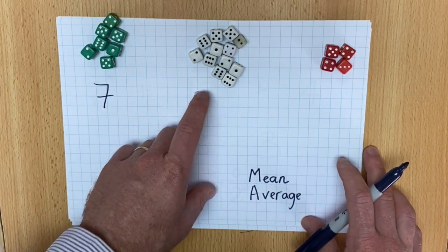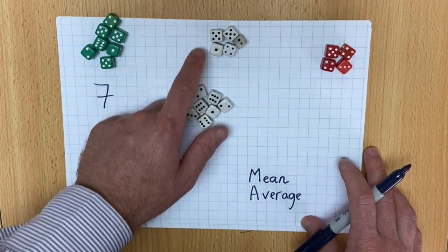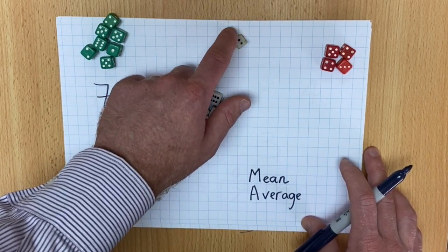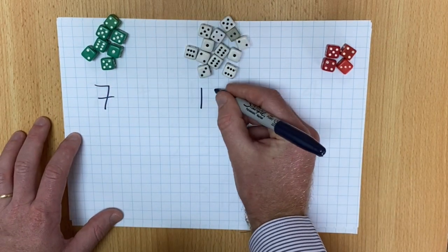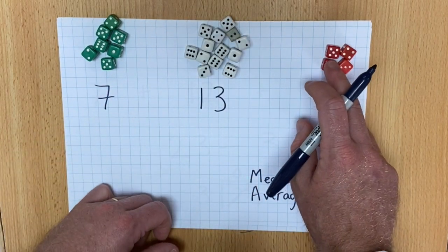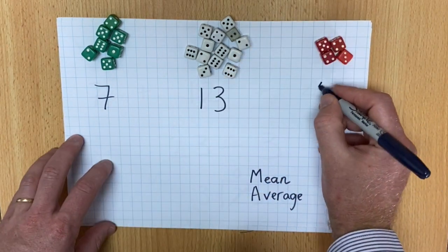How many white dice are there? One, two, three, four, five, six, seven, eight, nine, ten, eleven, twelve, thirteen white dice. How many red dice? One, two, three, four. Four red dice.